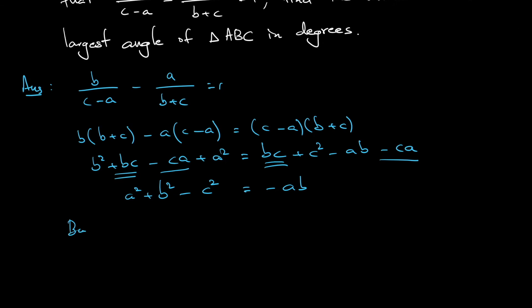So by using cosine rule in triangle ABC, notice that cosine of angle C is equal to (a² + b² - c²)/(2ab). Okay, so we can substitute. We know that the numerator is equal to -ab.